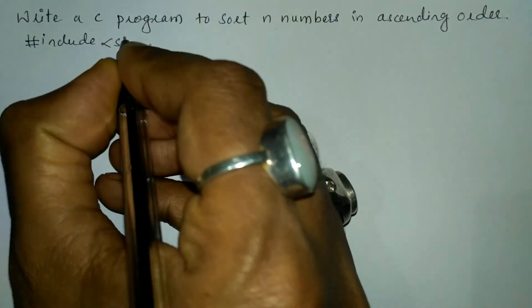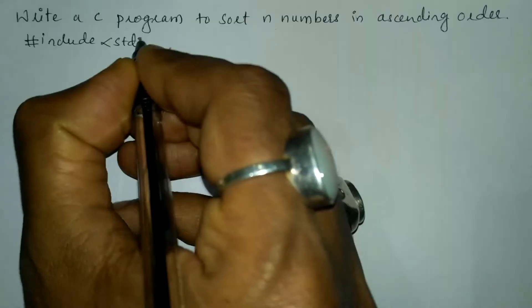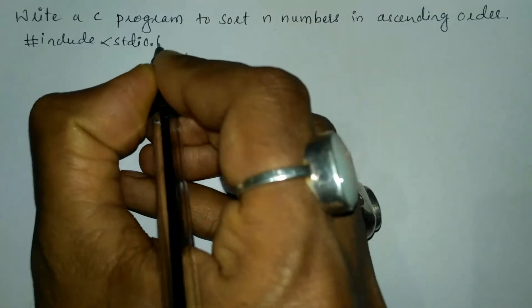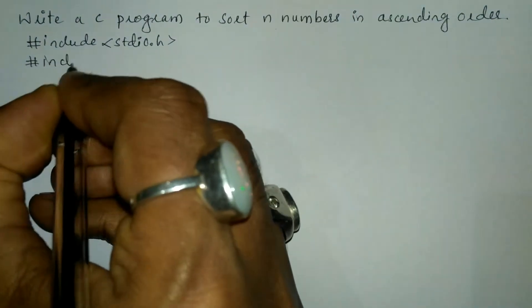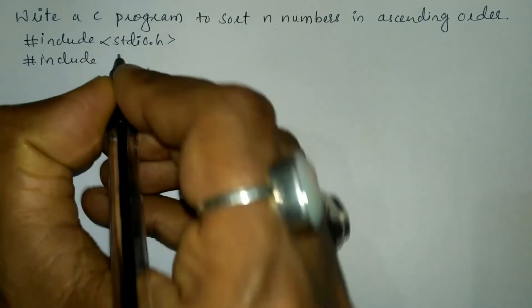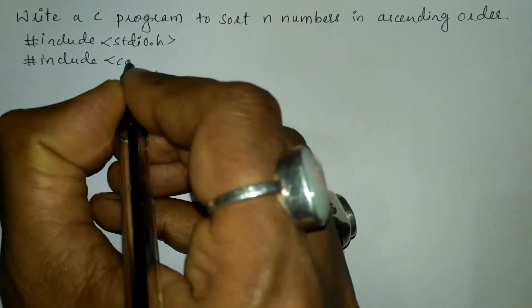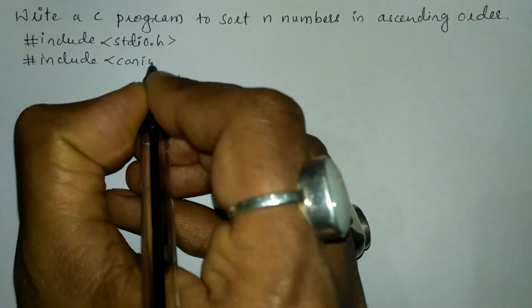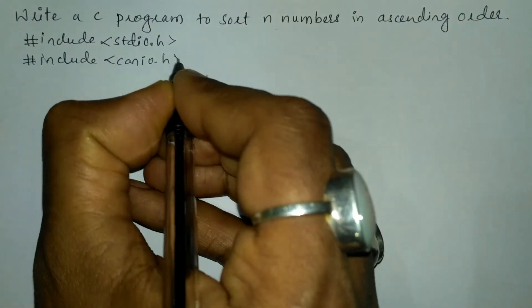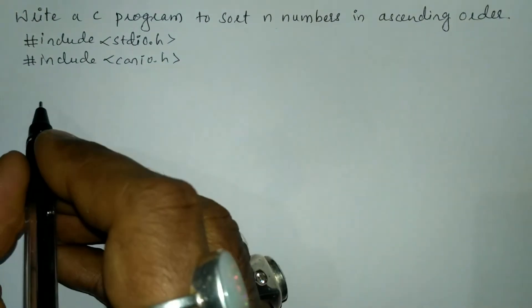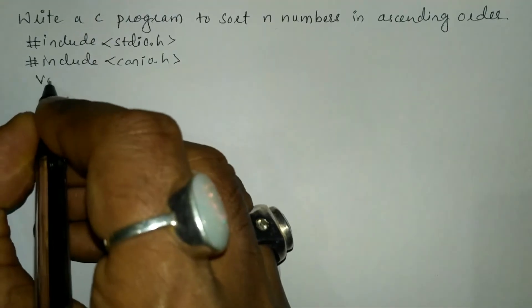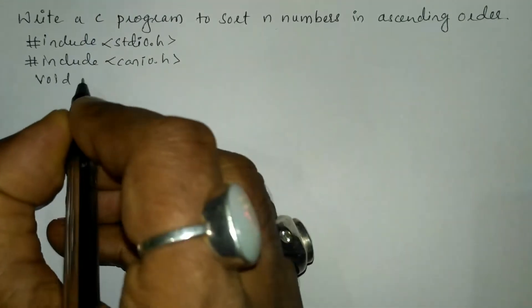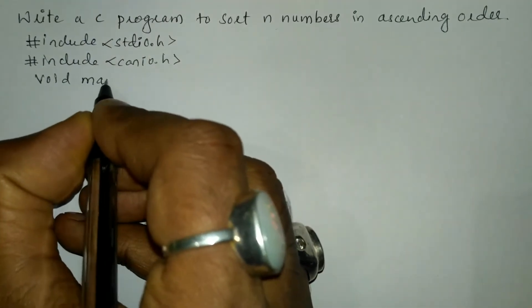In angular braces we'll write standard input output dot h header file, and the next preprocessor directive is hash include — in angular braces we'll write console input output dot h header file. Now let us write the main function.